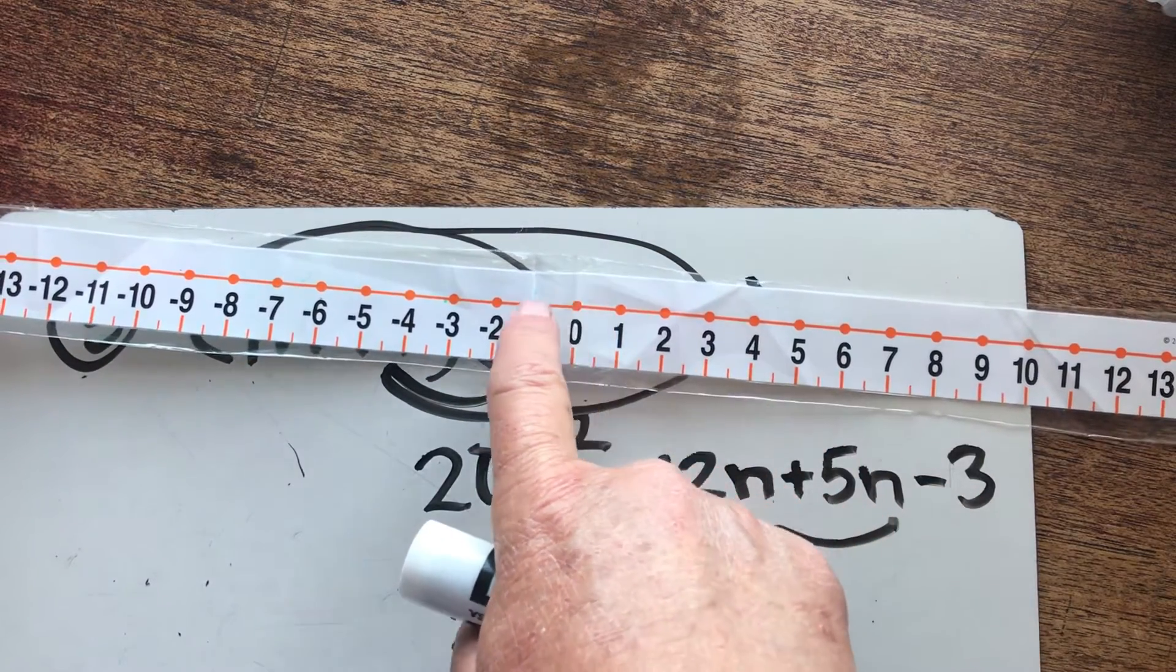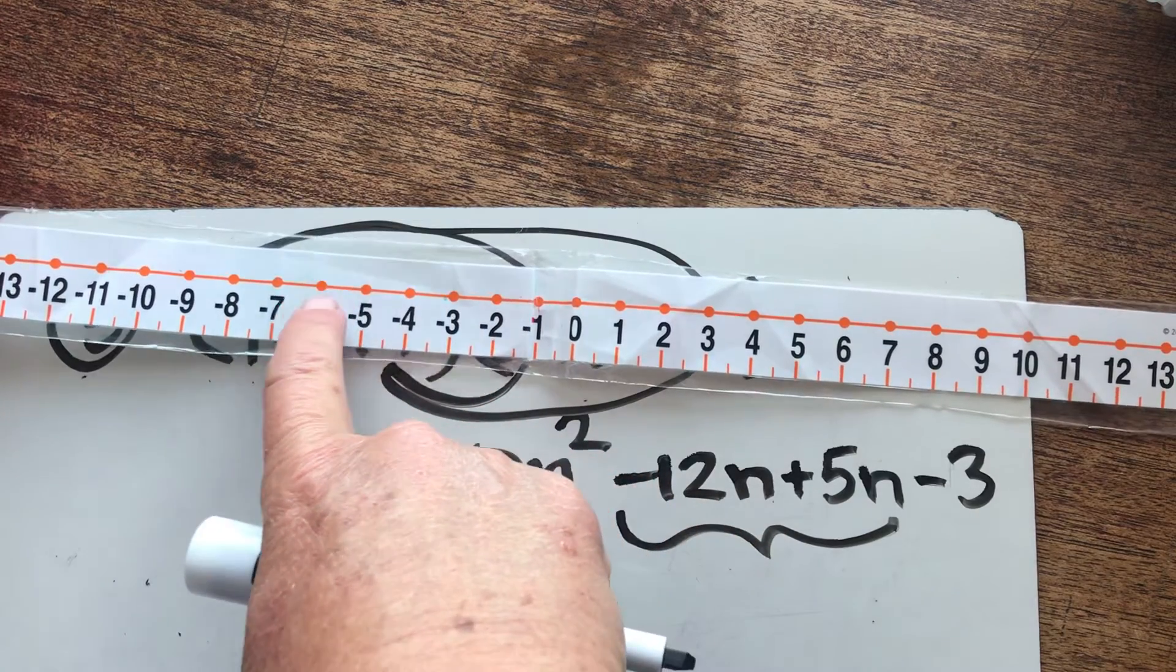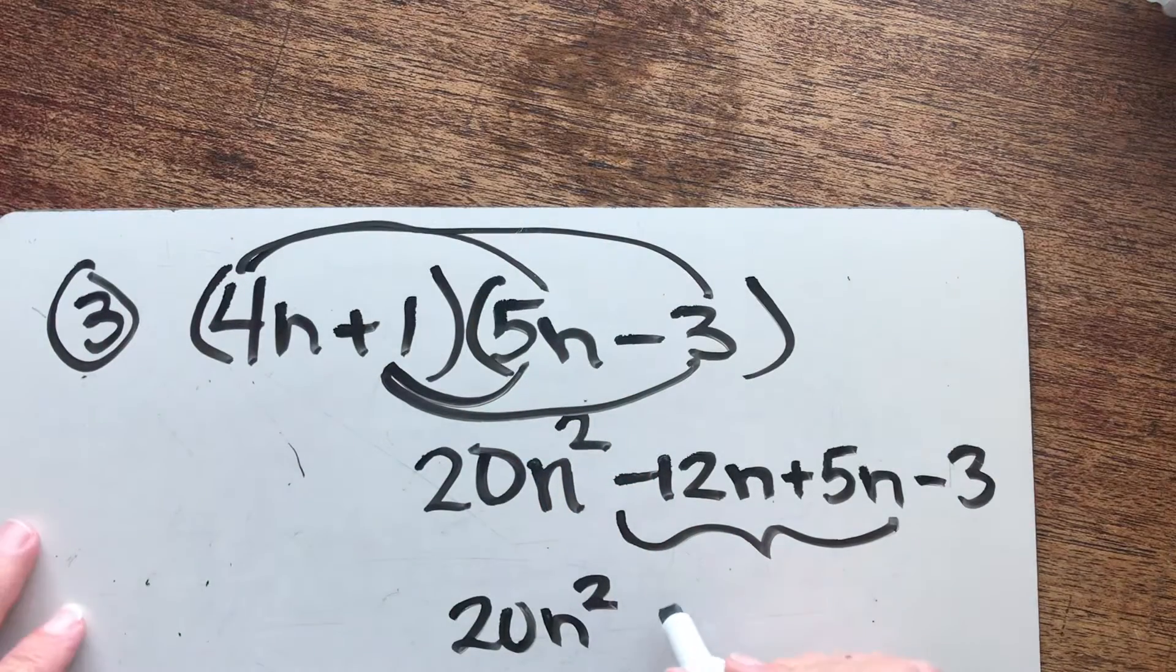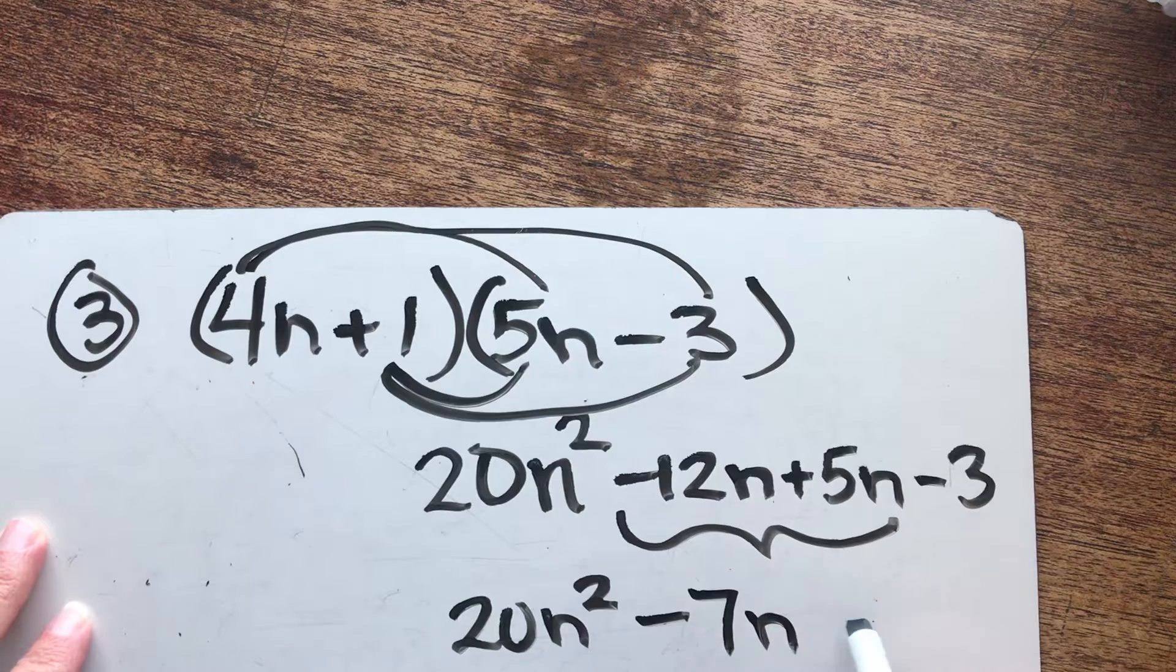Positive five and go back 12. One, two, three, four, five, six, seven, eight, nine, ten, eleven, twelve. It's written negative seven N minus three.